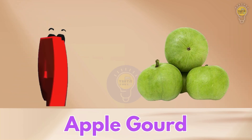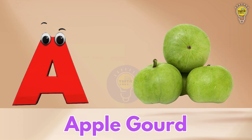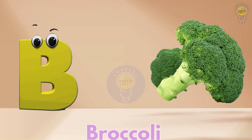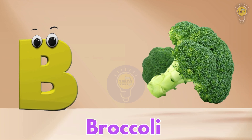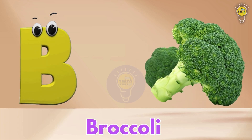A is for Apple Gourd. Apple Gourd. B is for Broccoli. Broccoli.